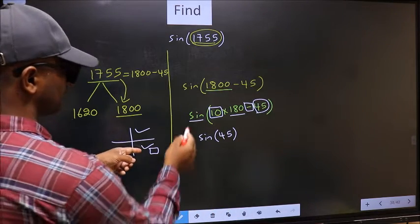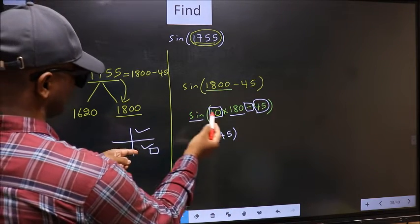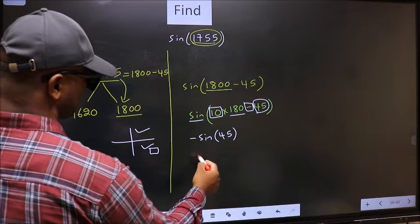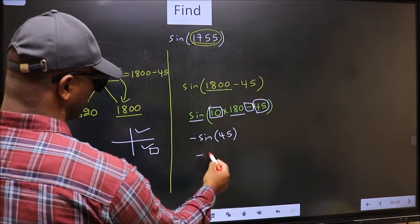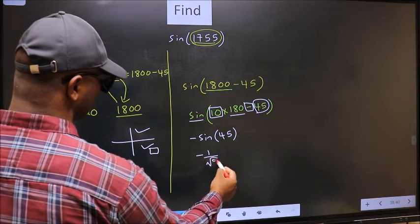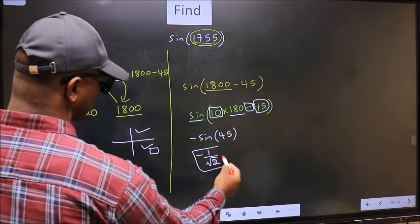And in the fourth quadrant, sign is negative. So we should put negative. So negative sign 45 is 1 by root 2. This is our answer.